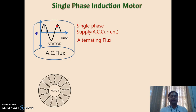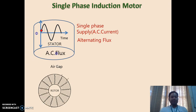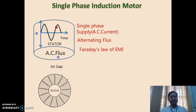After giving single phase supply, single phase current will flow, and this single phase current will set up alternating flux in the stator. As alternating flux has been set up in the stator, the flux passes through the air gap and goes over the rotor. The flux is cutting the rotor conductors. Whenever there is flux linkage changing with respect to time, according to Faraday's law of electromagnetic induction, EMF will get induced in the conductor.